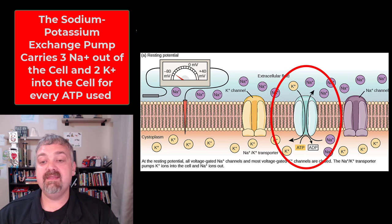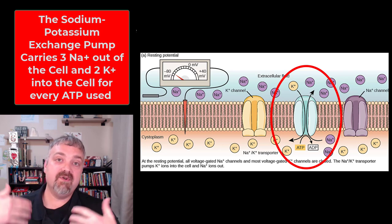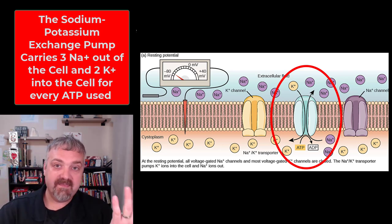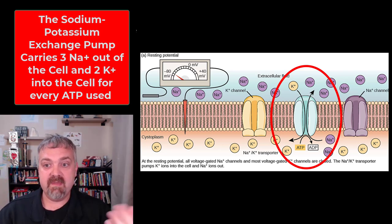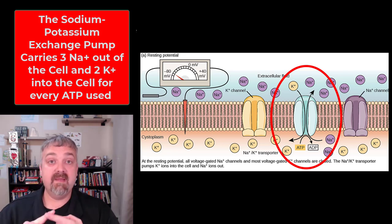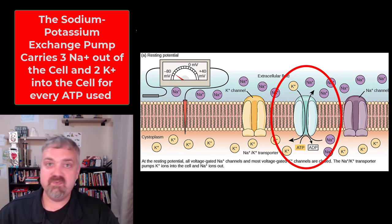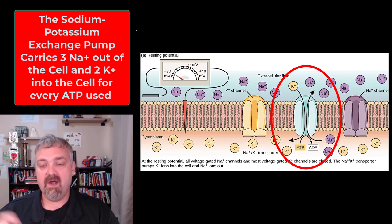So it takes active forces to maintain this voltage at negative 70 millivolts. The key player — you see right there in the middle — is the sodium-potassium exchange pump. For every ATP that is used, 3 sodiums are pumped back out of this neuron cell membrane and 2 potassiums are pulled back in. Just remember that resting membrane potential is negative 70 millivolts, and it is the sodium-potassium exchange pump that maintains it.